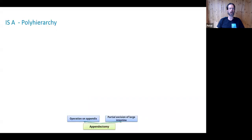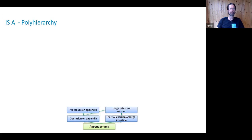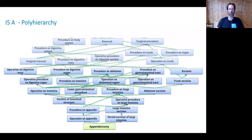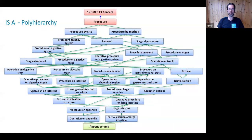Let's look at what that does to the hierarchy. An example here is appendectomy. I'm hoping to convey a general sense of the levels of abstraction in SNOMED, from the most specific to the most general, and you can choose what level of granularity to work at depending on your use case. Starting with those two relationships at the bottom: appendectomy is an operation on appendix, and it also is a partial excision of large intestine. Moving further up the hierarchy, operation on appendix is a type of procedure on appendix, and partial excision of large intestine is a subtype of large intestine excision. We build further up, bringing in more general concepts, arriving at the concept procedure, and finally to the concept SNOMED CT concept itself, also known as the root concept.